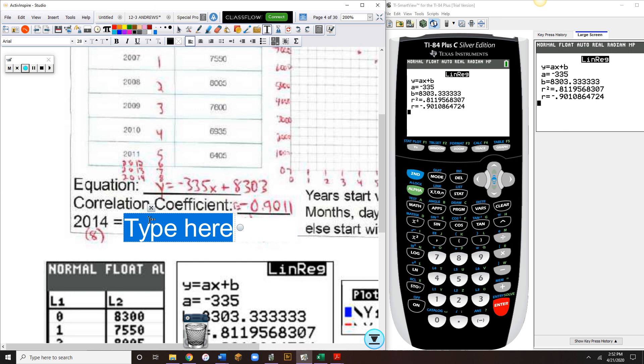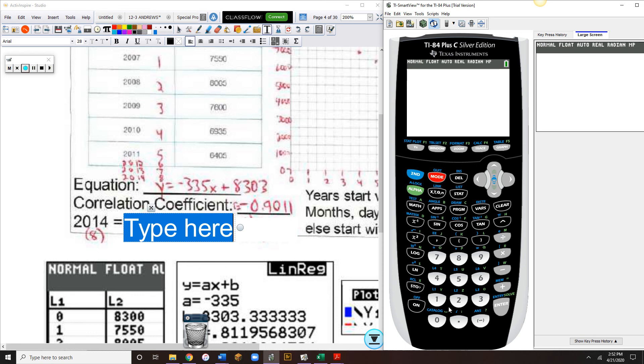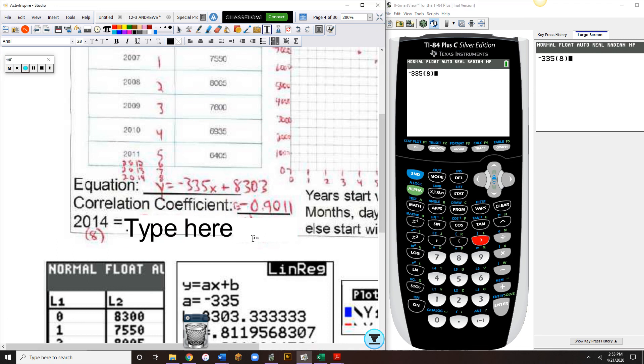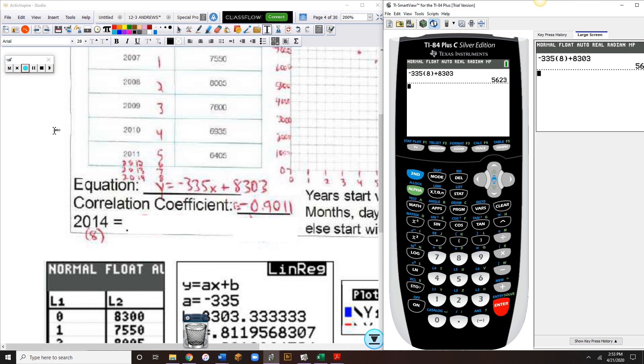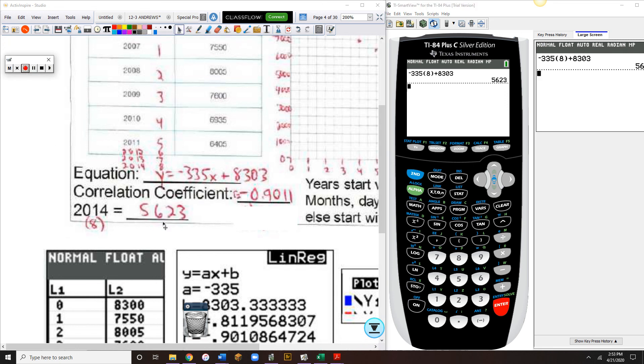You could do this a couple of different ways. The first way you could do it would be simply to type into your calculator negative 335, and in parentheses, put 8 instead of x, plus 8303, and that would give you your answer straight away. If you're just doing one prediction like we are right now, that's probably the easiest thing to do.